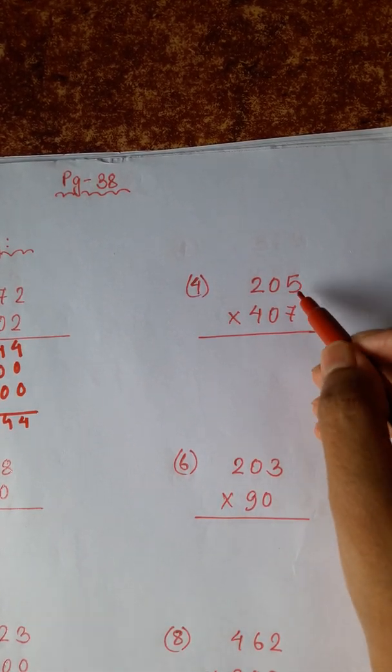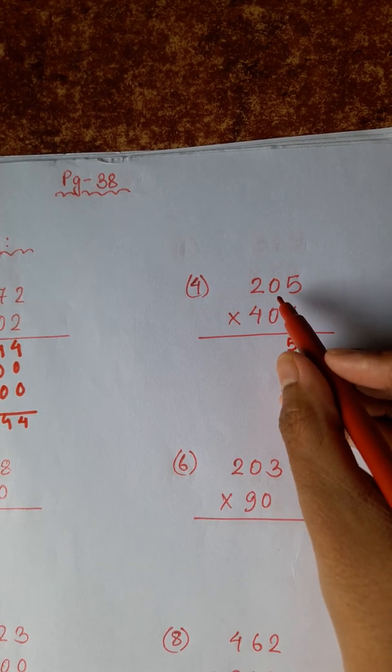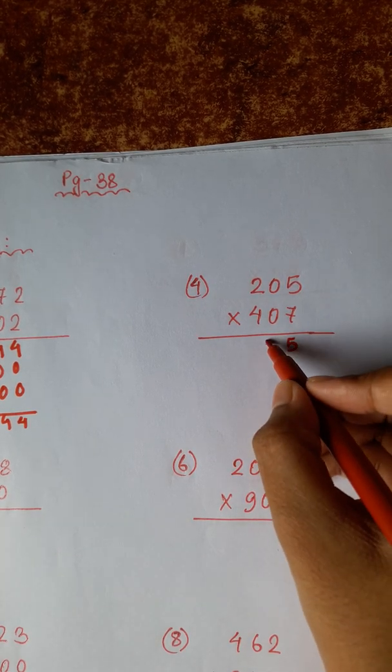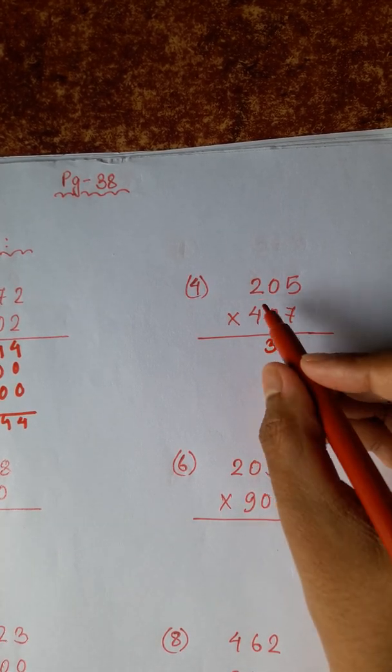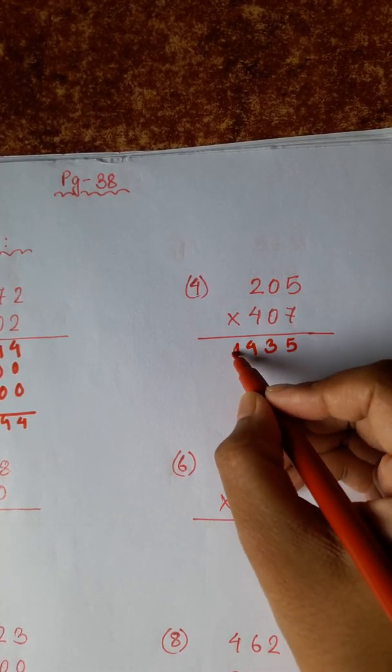5 × 7 is 35, carry 3. 7 zeros are 0, plus 3 is 3. 7 zeros are 14.